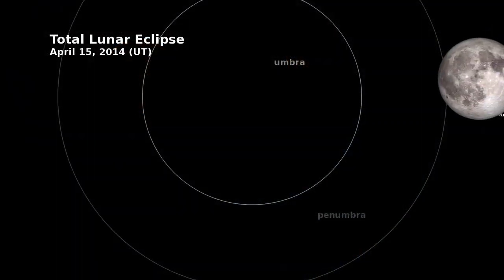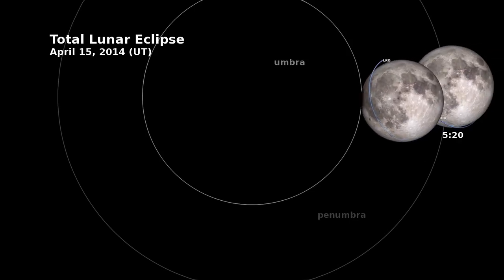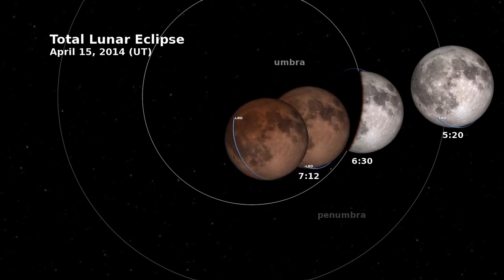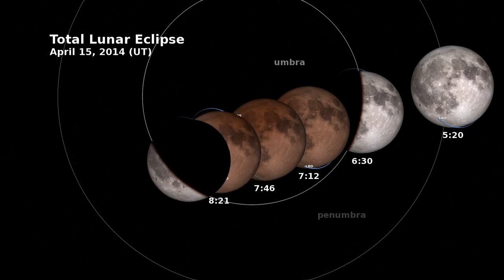What we see in this animation is a recreation of LRO orbiting the moon during the upcoming eclipse. When the moon passes into the Earth's umbra, or the Earth's shadow, that's when it is completely blocked from the sun, and we see the effect of Earth's sunsets being projected onto the lunar surface. That's why it turns a hue of red.